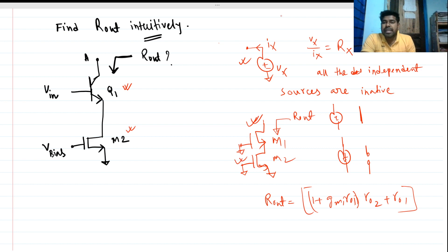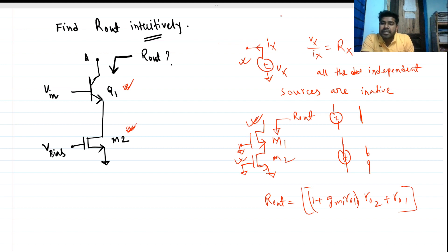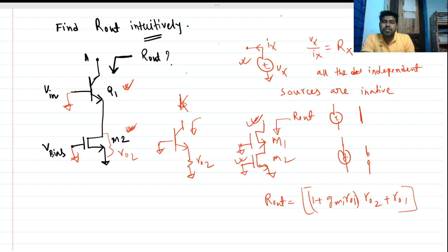This is for the MOSFET case where both transistors are MOSFETs. But in this case we have a BJT and a MOSFET, so let me draw the small signal model. There is a BJT, this is ground, and there is a resistance ro2. We know there is a beta factor, and r_pi is nothing but beta over gm. Let's say this is gm1 and this is gm2. There will be a resistance from this node to AC ground, which will be r_pi.